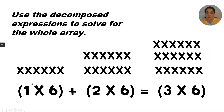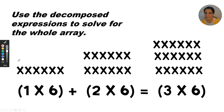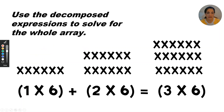Now I'm going to count these ones and add it to those ones and add it to those ones: 1, 2, 3, 4, 5, 6 — then continuing — 7, 8, 9, 10, 11, 12, 13, 14, 15, 16, 17, 18. So this row plus this row is also equal to 18.